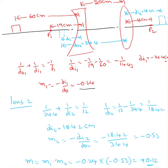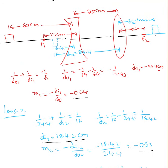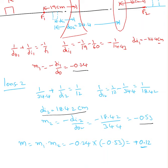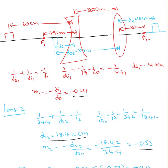1 over 34.4 plus 1 over distance of image 2 equal to 1 over 12. I end up with the distance of image 2 is 18.42 cm. Magnification factor is negative 0.53, so again it is going to be inverted. This is where the image is going to be, which is the final image. Magnification factor is 0.12, so it's only 12% of the original size. Thank you.